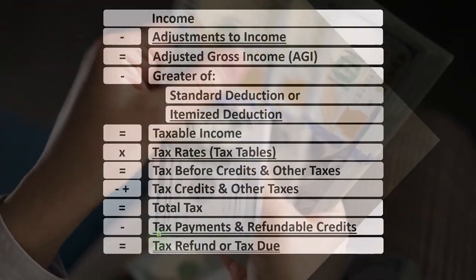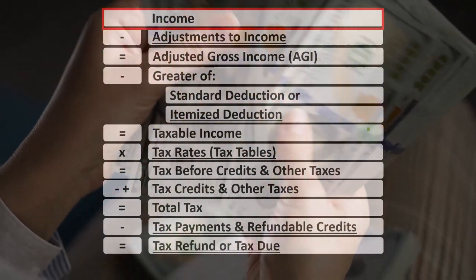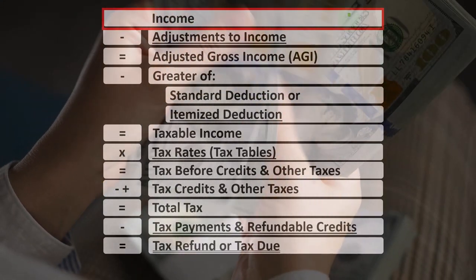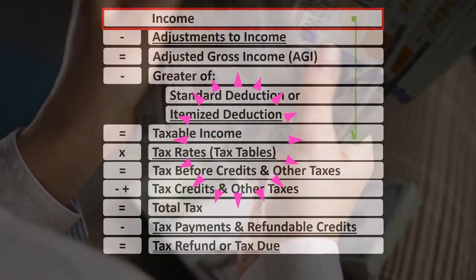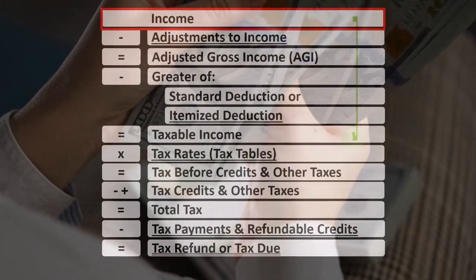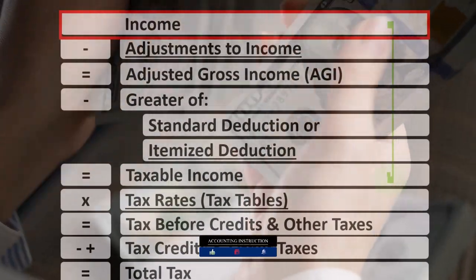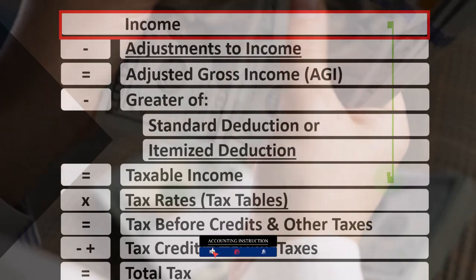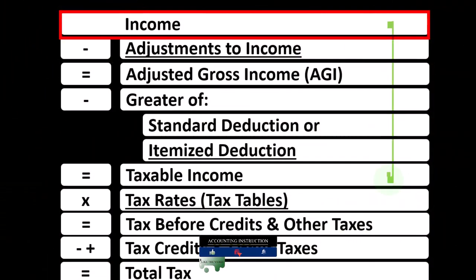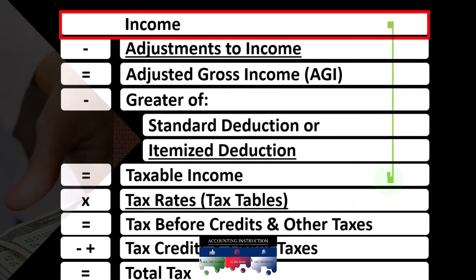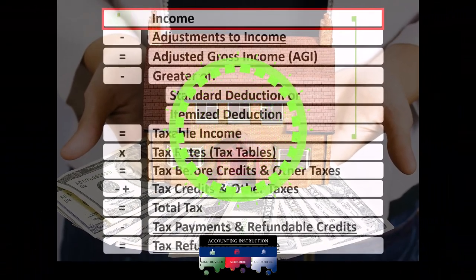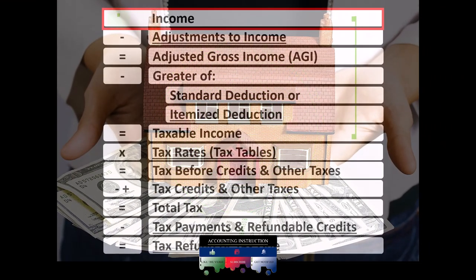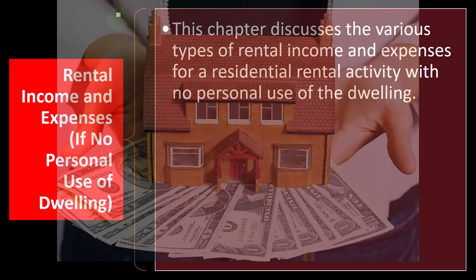Looking at the income tax formula, we're focused on line one income. Remember, the first half of the income tax formula is in essence an income statement, but just an outline, with other forms and schedules flowing into these line items. One of those is the Schedule E, having rental income minus rental expenses. The net rental income flows into line one income of our income tax formula.